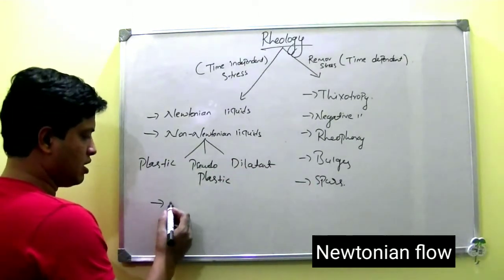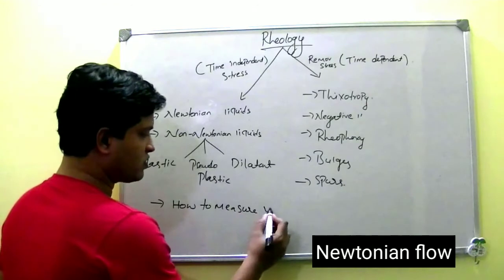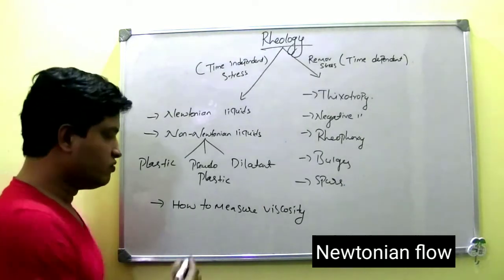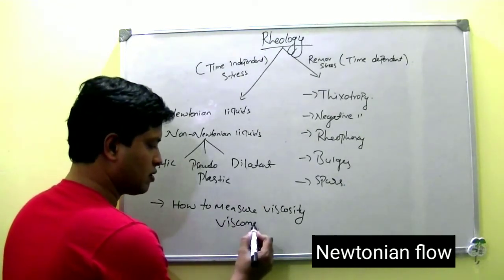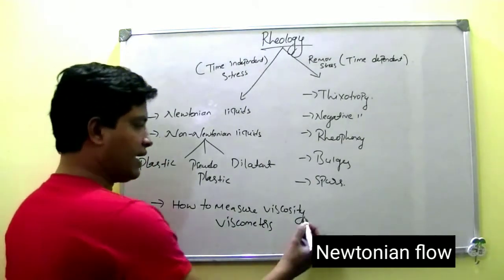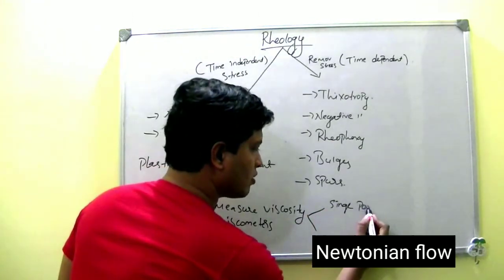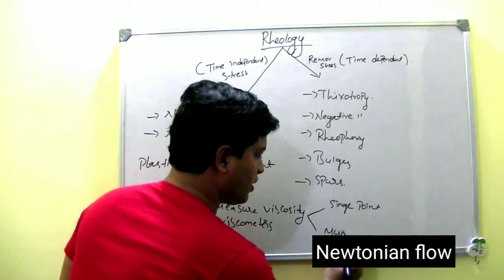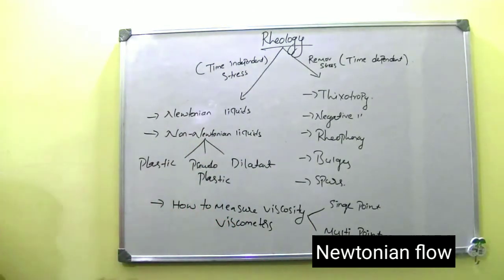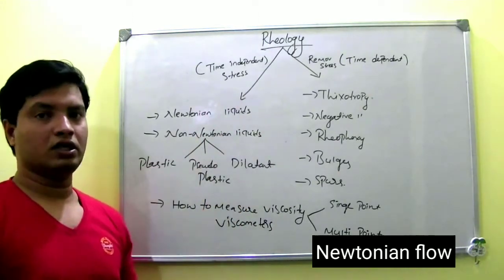Finally, we are going to study how to measure viscosity. The instruments used to measure viscosity are called viscometers, and they are classified into two types: single point and multipoint. If you study all this, rheology is complete.